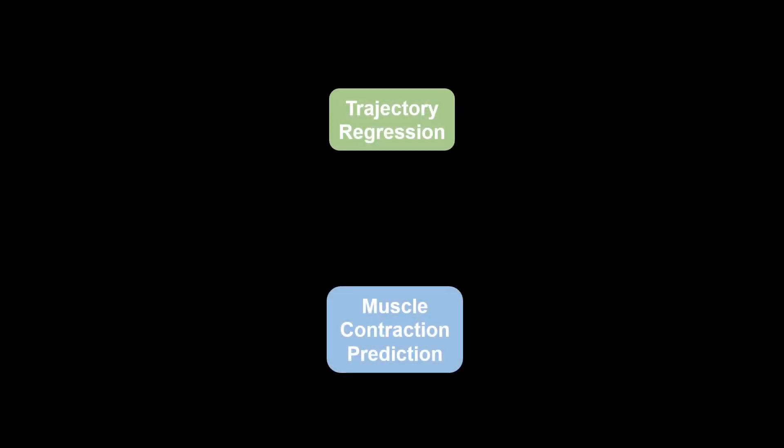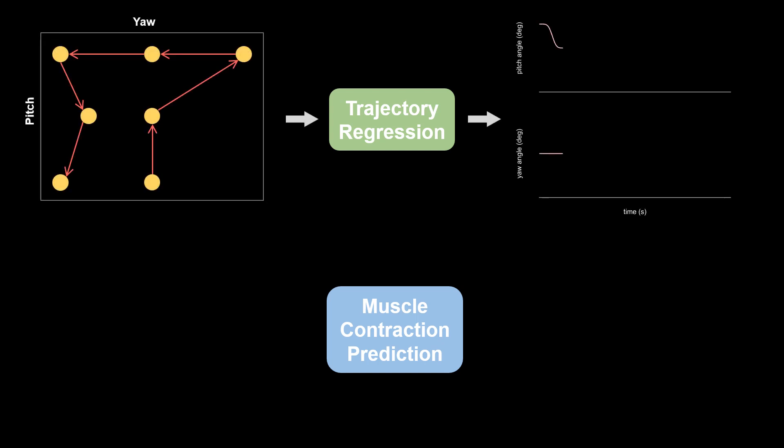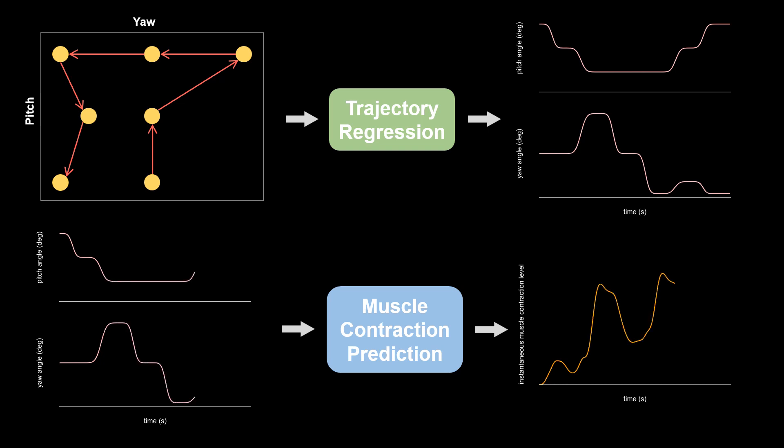The overall muscle contraction level prediction pipeline consists of two core components: a trajectory regression module that takes in a sequence of starting ending head pose pairs and outputs a smooth head motion trajectory, and a muscle contraction level prediction module that takes in a head motion trajectory and outputs the corresponding muscle contraction level required for completing a movement.